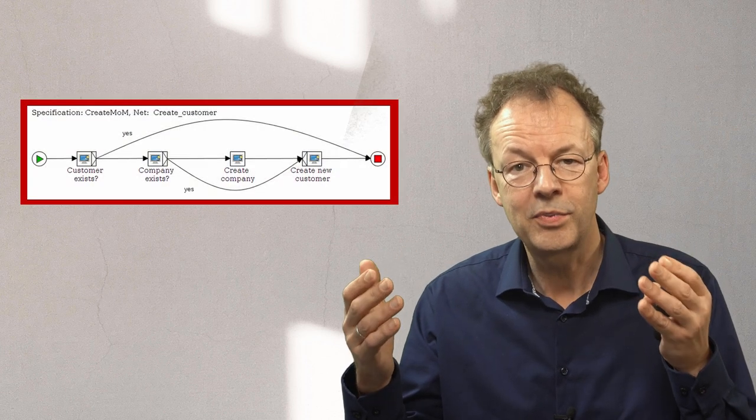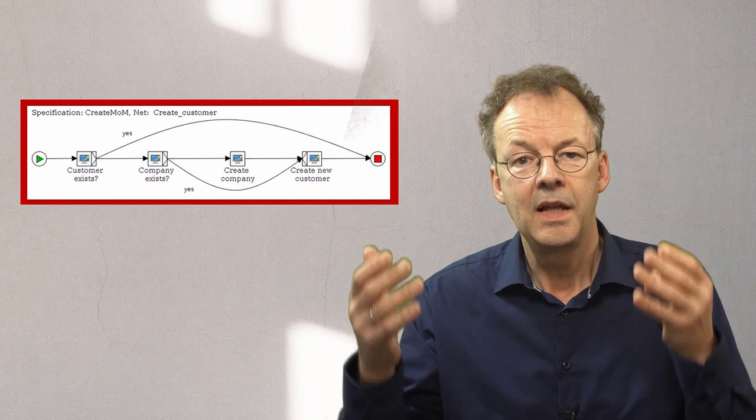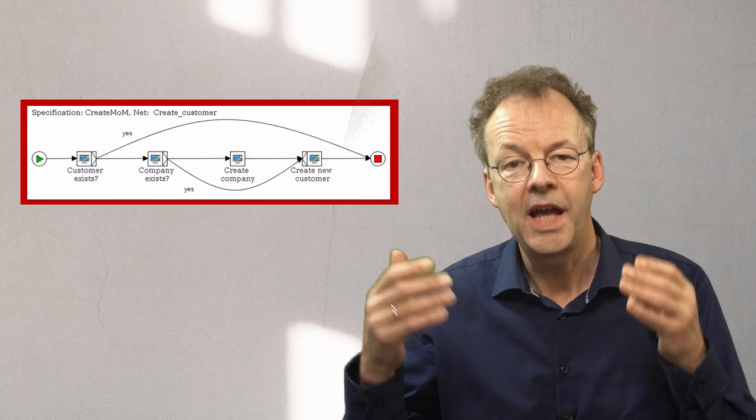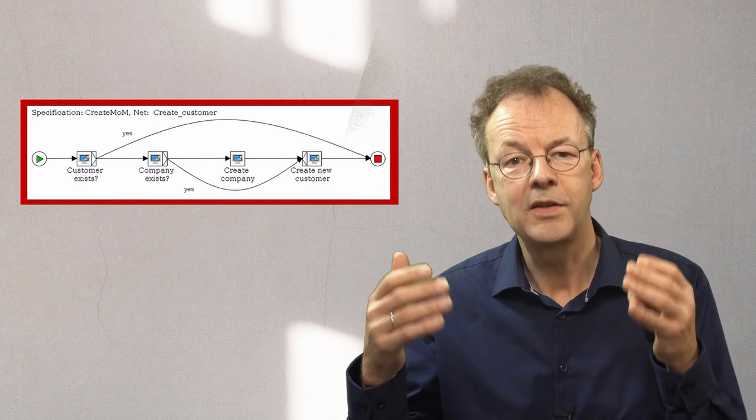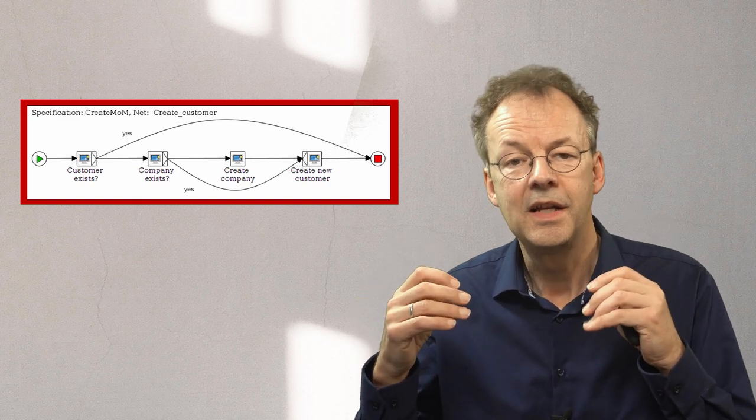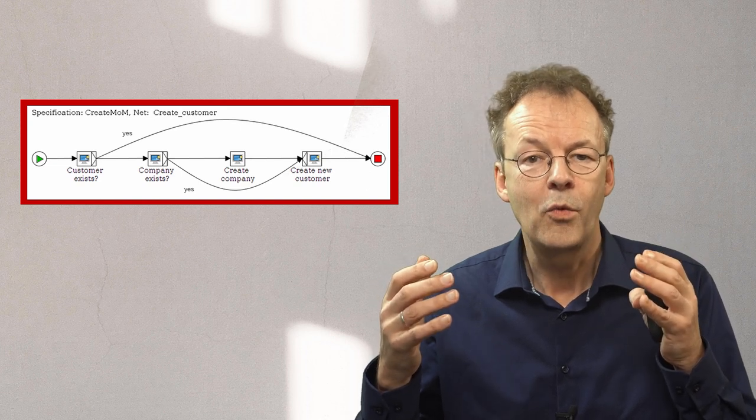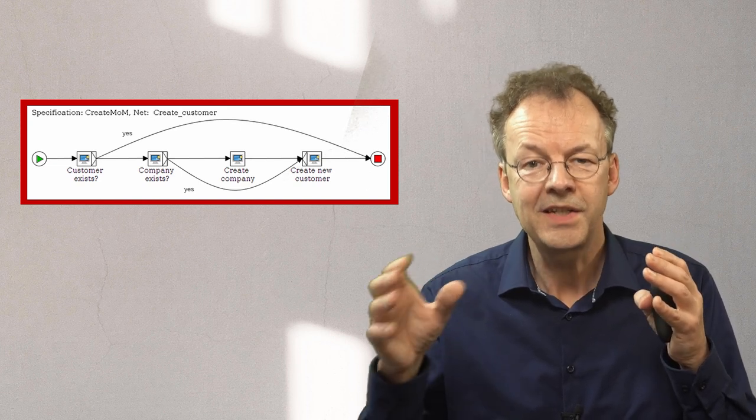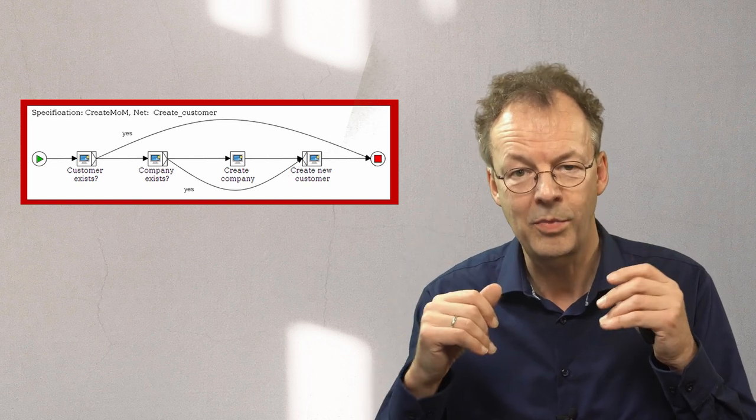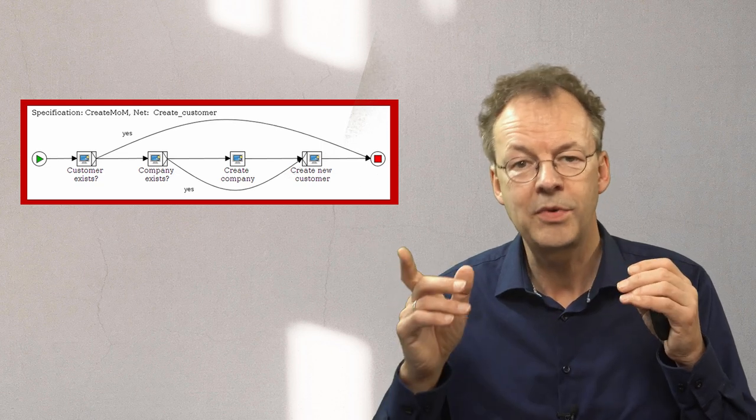Let's now look at the subprocess 'create customer.' We've divided this into four tasks, each being a robotic process automation task. The first is a question: does the customer exist? We imagine a robot accessing the customer relationship management system and looking up the customer we just entered in the top-level net. If yes, we jump to the end.